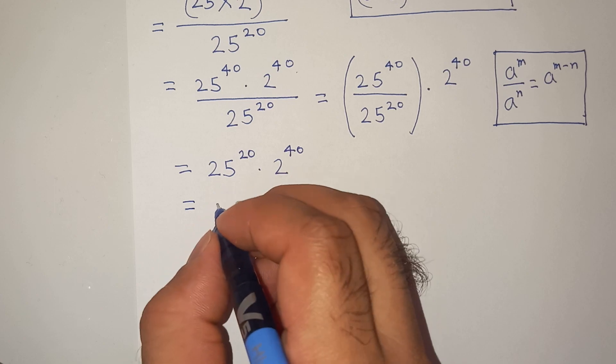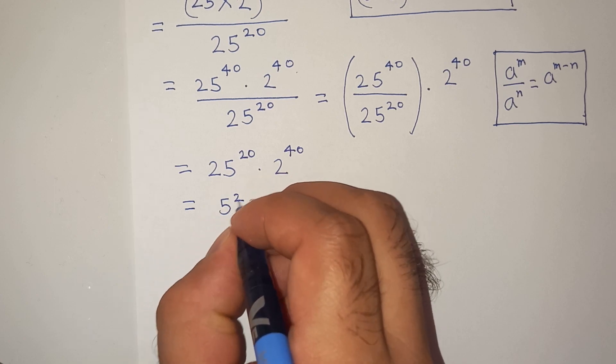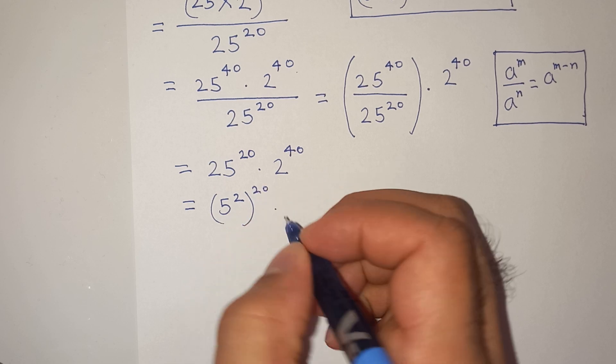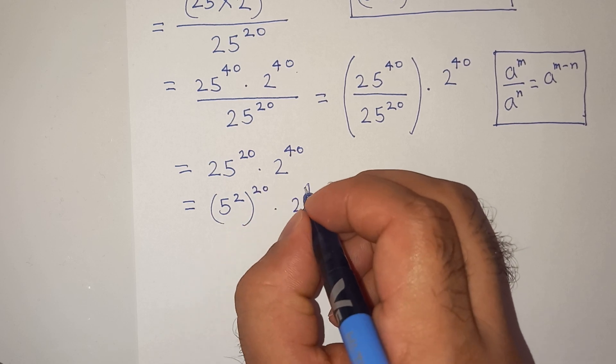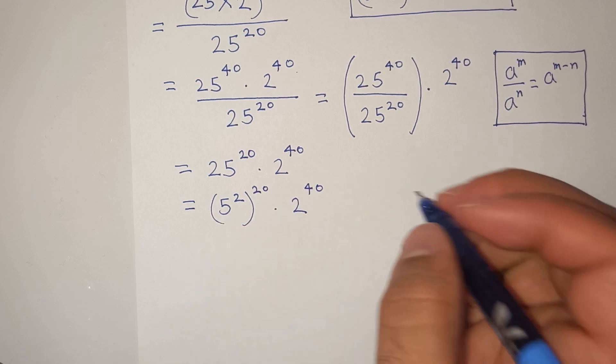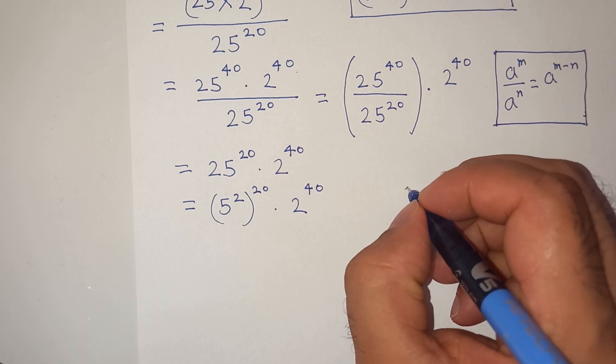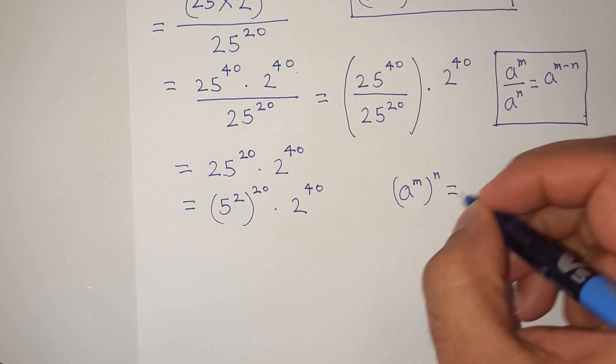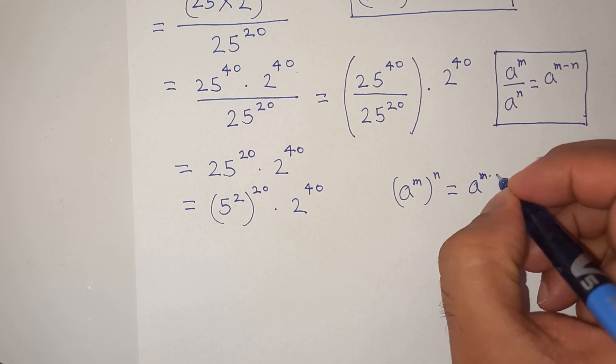Now this 25 can be written as 5 square bracket power 20 multiplied by 2 power 40. Now we will apply this exponential rule A power M bracket power N equals A power M multiplied by N.